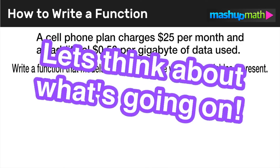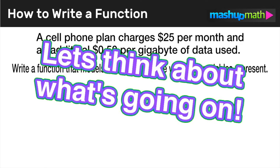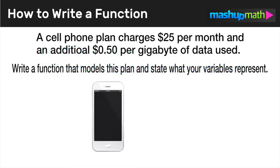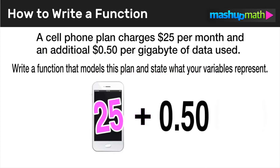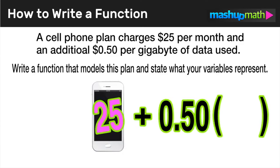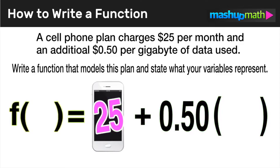Before we do anything, let's really think about what's going on here. You need to model this scenario mathematically by creating a function with the information that we're given. With this particular cell phone plan, we have to pay $25 a month just to have the phone, and on top of that $25 a month, we have to add an extra 50 cents per every gigabyte of data that we use. We're paying that $25 no matter what, and whatever extra money on top of that depends on how many gigabytes of data we use.